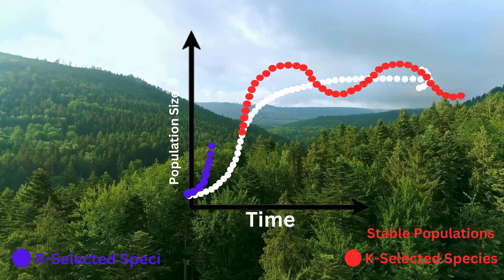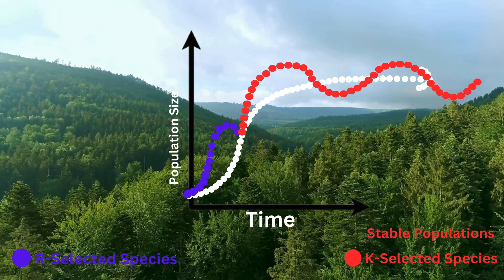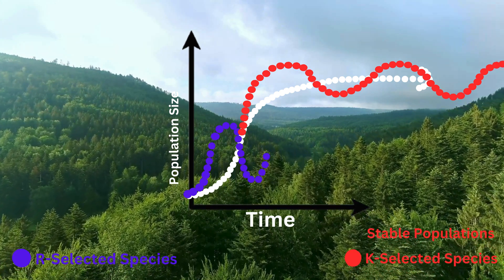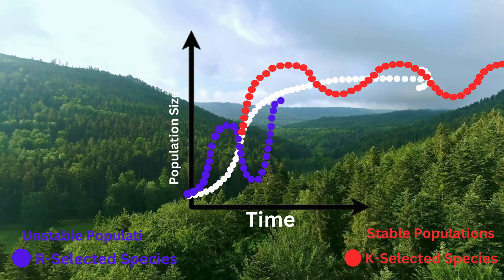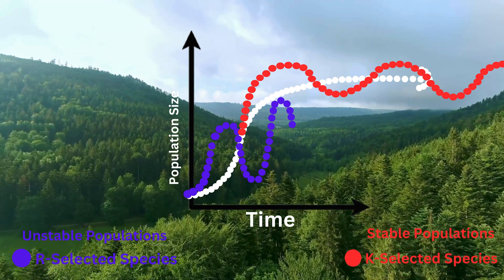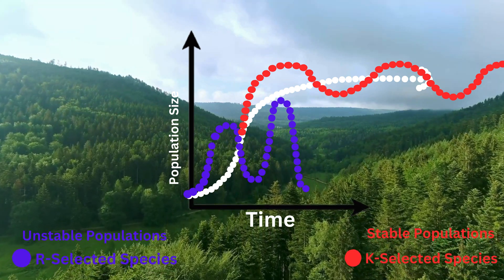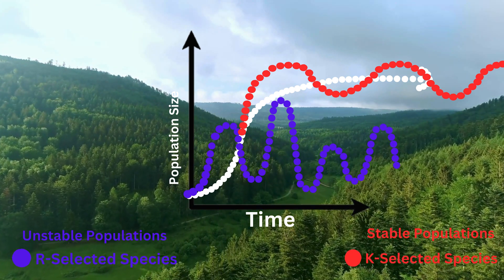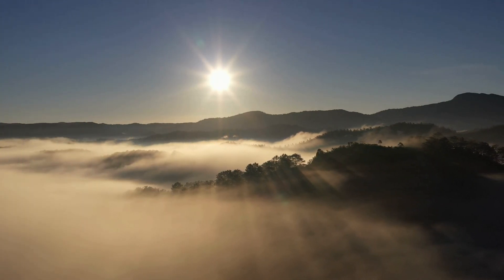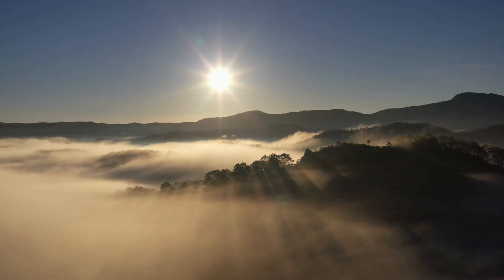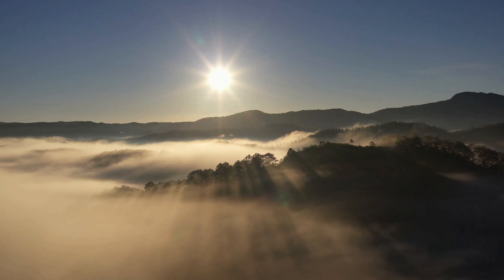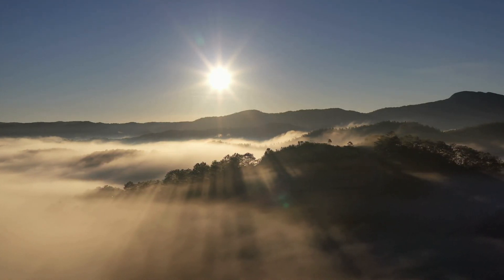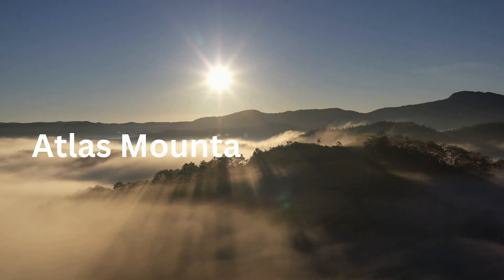The term R-selected comes from the idea that these organisms, who live in unstable conditions, will maintain populations significantly below their carrying capacity. As time passes, their populations will have high bursts of growth that traverse to extreme declines, spending most of their life in a population growth phase, or R-region of the graph. To grasp what makes an ecosystem stable or unstable, let's explore the major differences between R and K-selected species as we take a ride into the Atlas Mountains of North Africa.